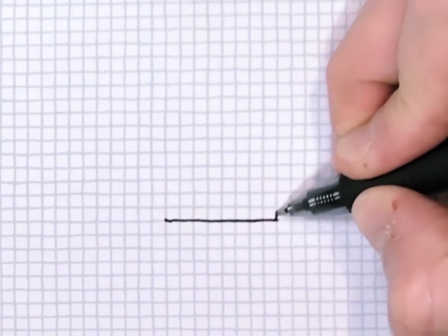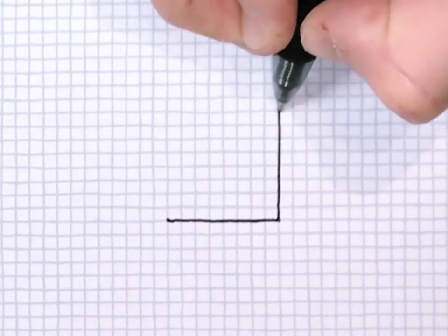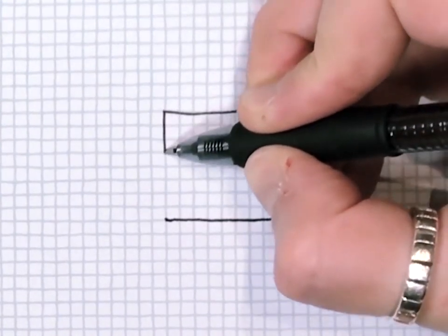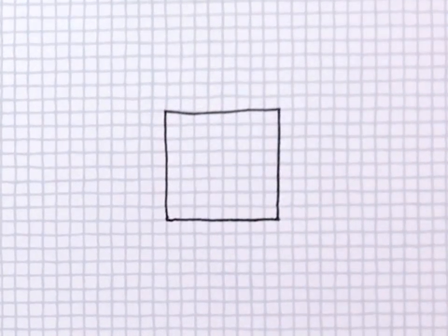If you take that one dimensional figure and drag it perpendicular to itself, what you end up with is a square whose sides are made up of lines.